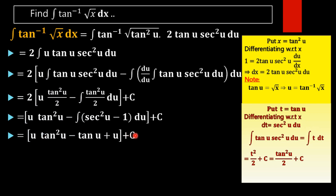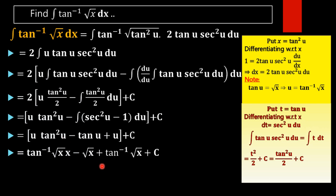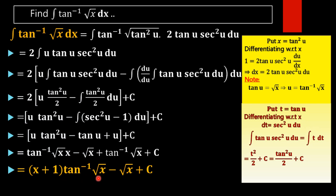Now we back-substitute in terms of x. Since tan²(u) = x, we have tan(u) = √x, and u = tan⁻¹(√x). Substituting: tan⁻¹(√x)·x - √x + tan⁻¹(√x) + C. Since tan⁻¹(√x) is a common term, the final answer is (x + 1)·tan⁻¹(√x) - √x + C.